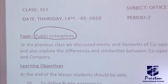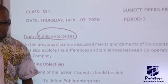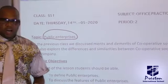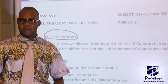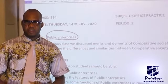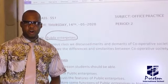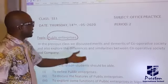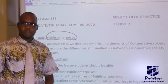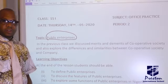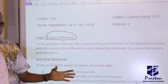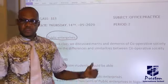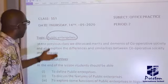In our previous class, we looked at corporate society. We defined corporate society, looked at the merits and demerits of corporate society, and we looked at the history of corporate society. We also looked at the types of corporate society. Today we are looking at a different topic entirely, which is public enterprise.